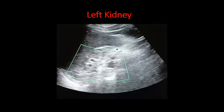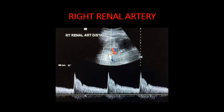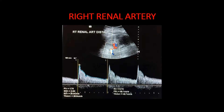This is the spectral Doppler of the right renal artery in the mid-distal part. We can see that it shows a good amount of diastolic flow, indicating low-resistance flow. The peak systolic velocity in the right renal artery was about 89 cm/s, while in the aorta it was about 82 cm/s, giving a renal-to-aortic ratio just slightly above one.